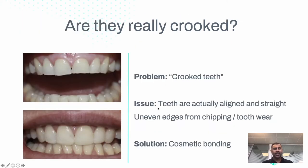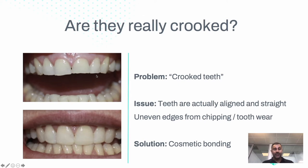The main question is: are they really crooked? Here, this person had a problem with crooked teeth, but the issue was that the teeth are actually aligned — they sit next to each other horizontally. The main issue was actually the uneven teeth edges, caused by teeth grinding over time. The solution here was cosmetic bonding, a procedure where you can additively and non-invasively restore and add the edges of the teeth.